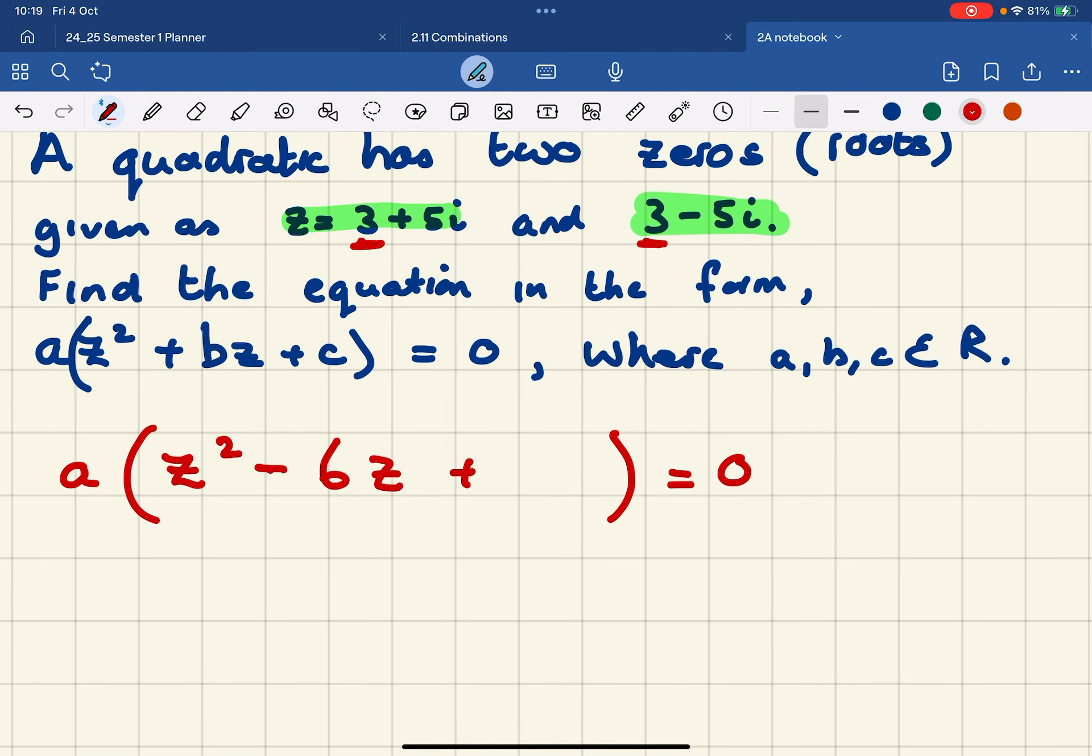Now the number at the end here is the 3, and I square it, and the 5 or minus 5 squared. So that's 9 and 25, and that's 34.